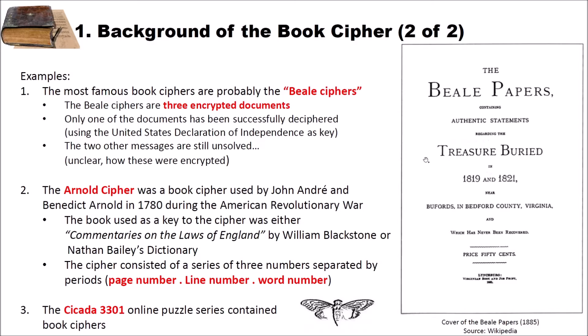My second example for a book cipher is the Arnold cipher, which was a book cipher used by John André and Benedict Arnold in 1780 during the American Revolutionary War. The book they used as a key for the cipher was either the Commentaries on the Laws of England by William Blackstone or Nathan Bailey's Dictionary. The cipher consisted of a series of three numbers separated by periods: page number, line number, and word number.